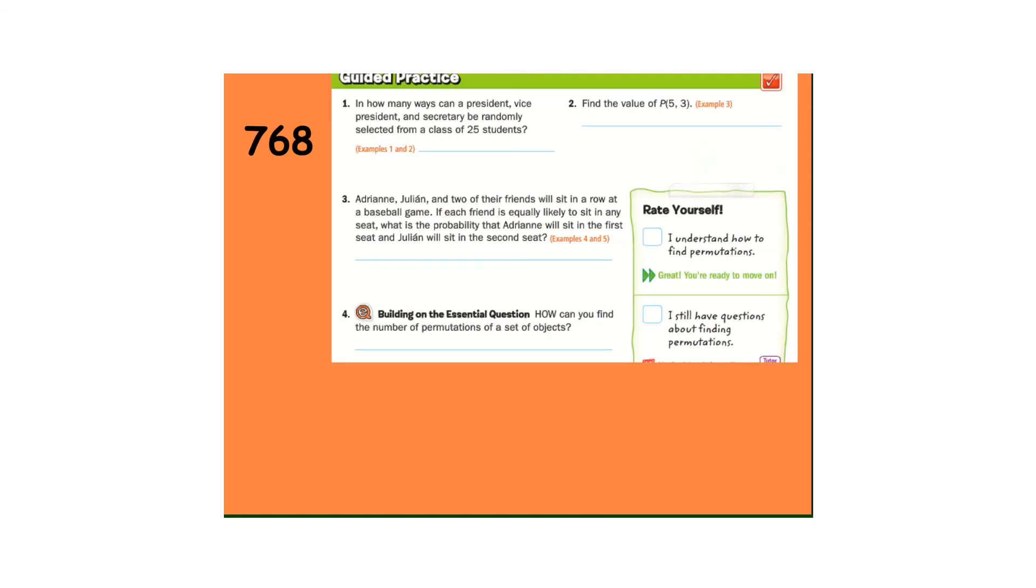Guided practice. Go ahead and pause and do one, two, and three. Number one. We need a president, a vice president, and a secretary out of 25 students. So that's 25 times 24 times 23. I'm using my calculator, and we get 13,800.